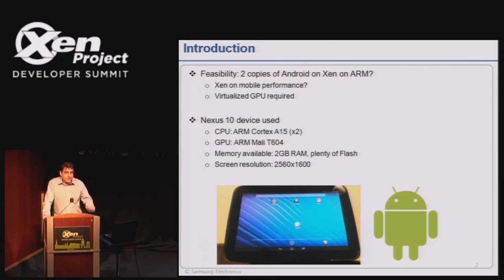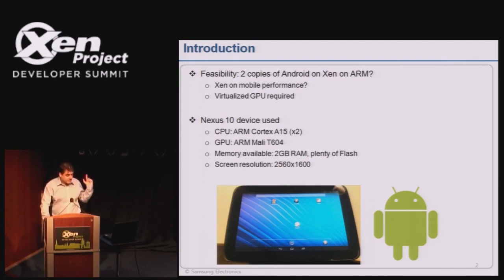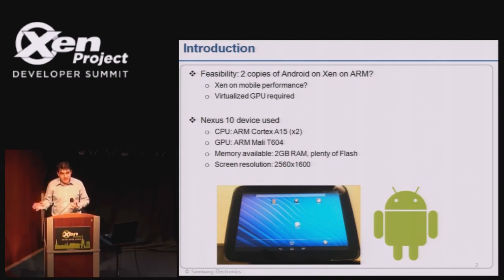I say plenty of flash - that means plenty to run two Androids, not plenty in the server world sense of terabytes. The screen resolution on the Nexus 10 is very high - like four times the resolution of a smartphone. So when we virtualize the GPU and get the second Android running, we are stressing our system. It is kind of like the worst case.